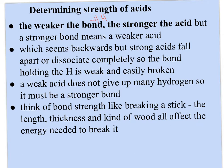A stronger bond means a weaker acid, which seems backwards. But strong acids completely dissociate, so the bond holding the hydrogen must be weak and easily broken. A weak acid doesn't give up many hydrogens, so it must be holding on strongly. You can think of bond strength like breaking a stick — the length makes it easier or harder to break, with single bonds being longer and easier; the thickness relates to polarity; and even the kind of wood — what substance it is, its shape, how easily you can get to the hydrogen ions — all affect the energy needed to break it.